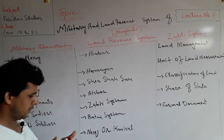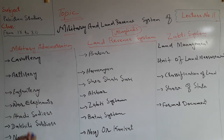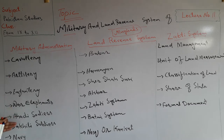These are the major parts of the military system of the Mughals: Cavalry, Artillery, Infantry, War Elephants, Ahadi soldiers, Dakhli soldiers, and Navy.